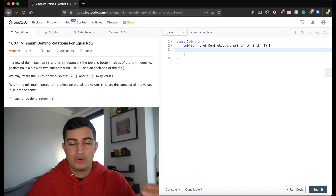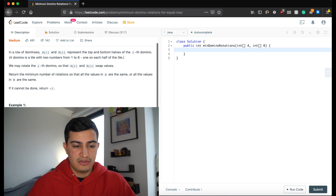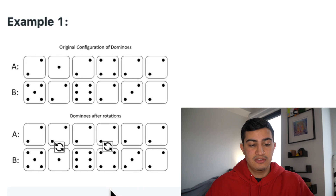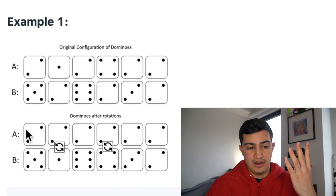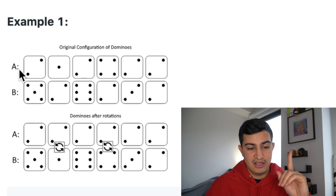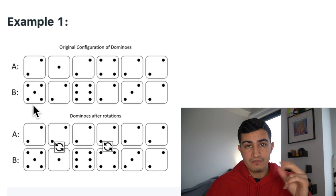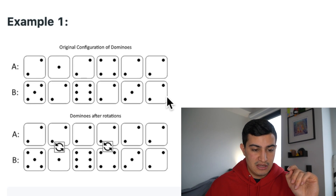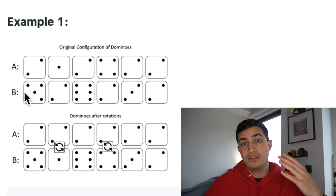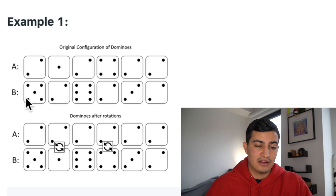The key insight is that regardless of how many dominoes you have, there are only four possibilities to try. We can try to make every single value in A match A[0] — that's one possibility. We can try to make every single value in A match B[0] — that's two. The third possibility is making every value in B match A[0], and the fourth is making every value in B match B[0]. So regardless of how many dominoes we have, those four possibilities are the limiting factor.